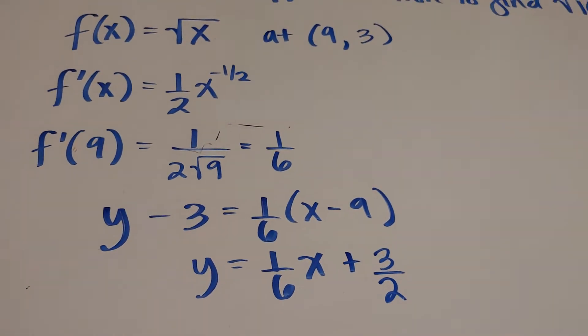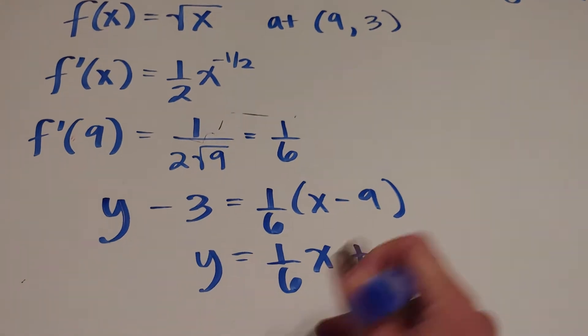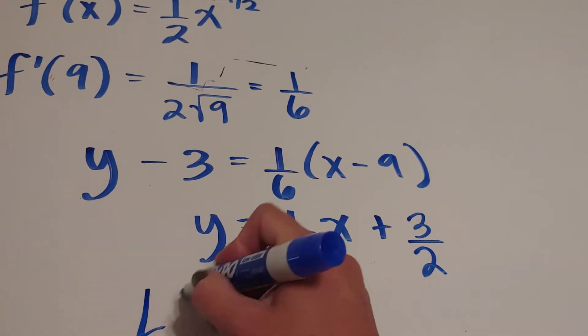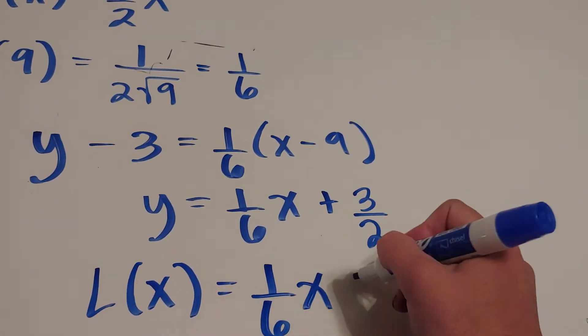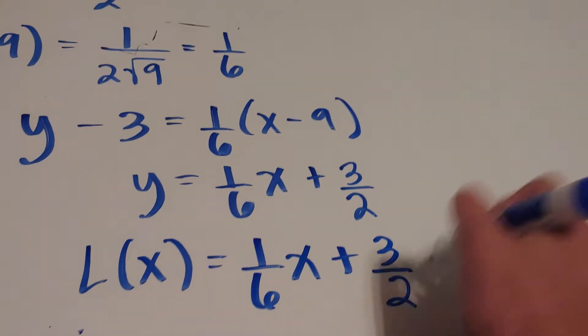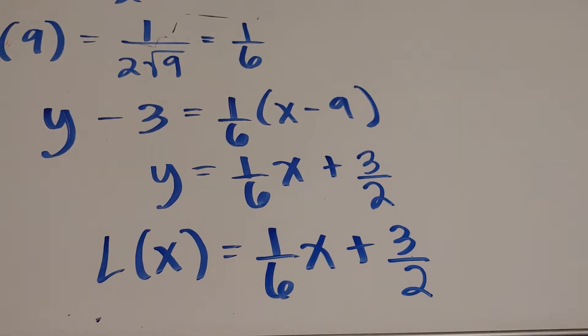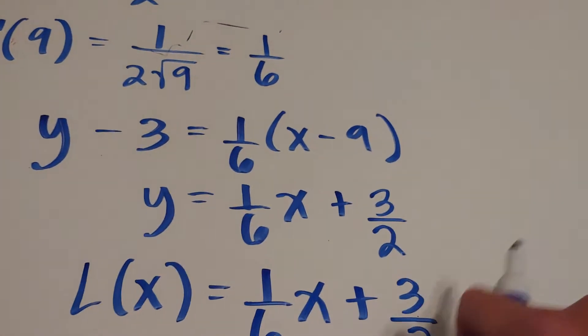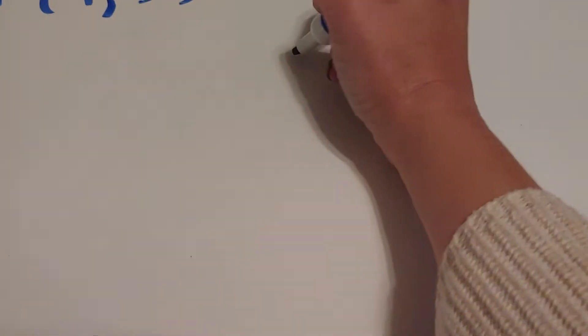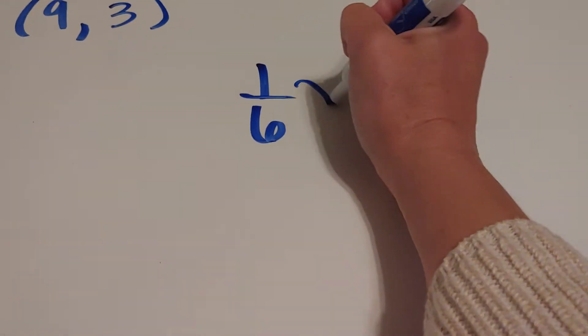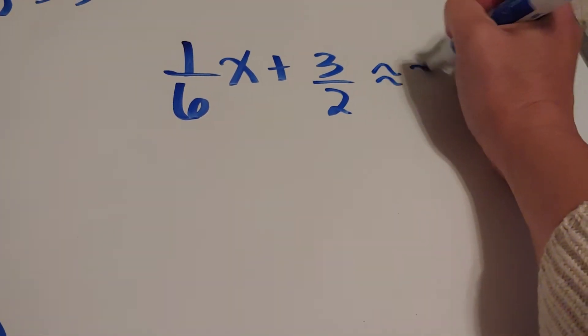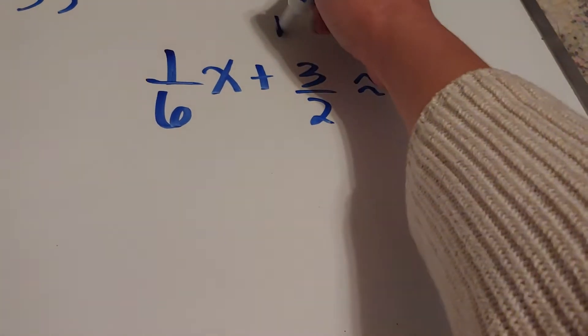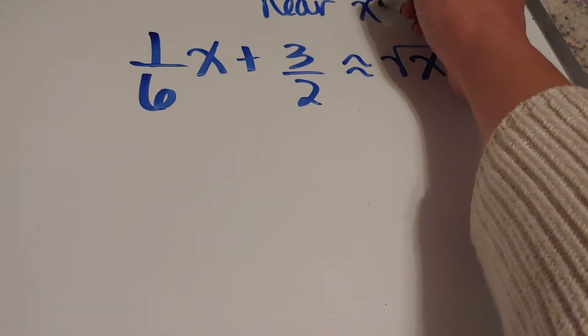Now to make sure that everybody knows what we found, this is my linear approximation, so we usually rename it L(x). What we just found is that one-sixth x plus three-halves is approximately equal to the square root of x near x equals 9.